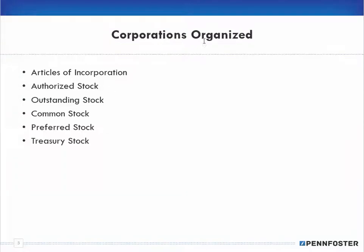In the last video we talked about how corporations are organized. To set up a corporation you have articles of incorporation — the paperwork to establish the entity. Part of that paperwork includes shares of stock that are authorized, which is a fictitious number saying how many shares could possibly be sold. That can be adjusted, but generally you try not to. Out of authorized stock, whatever is sold is the outstanding stock — common or preferred. When the company buys back some stock, that's treasury stock.